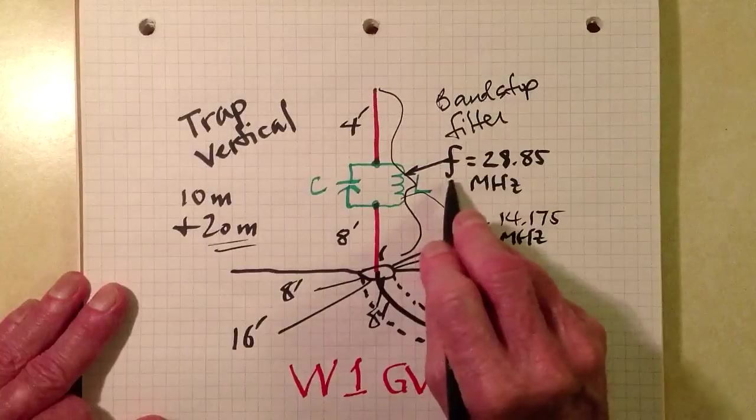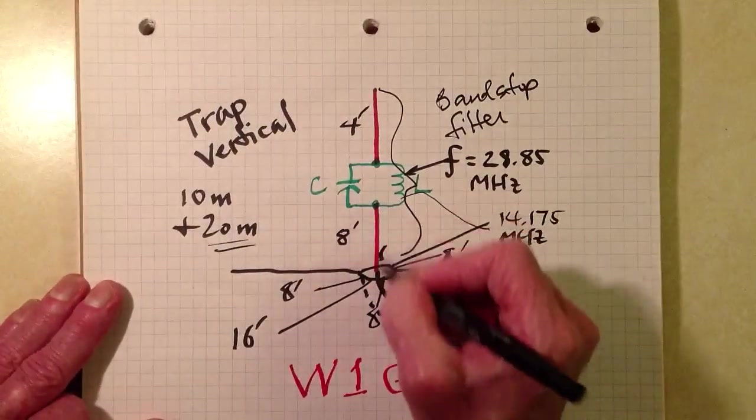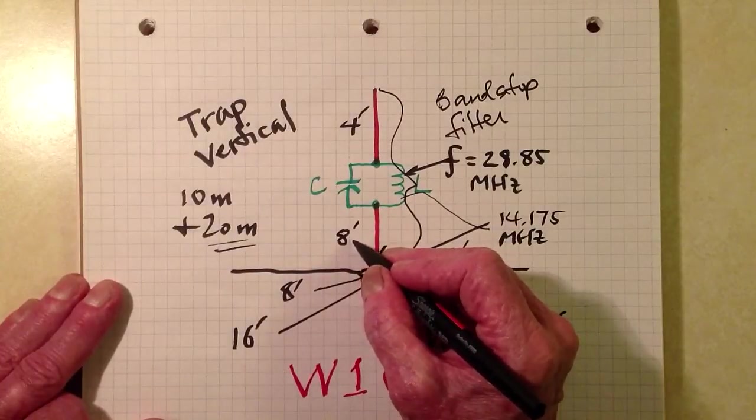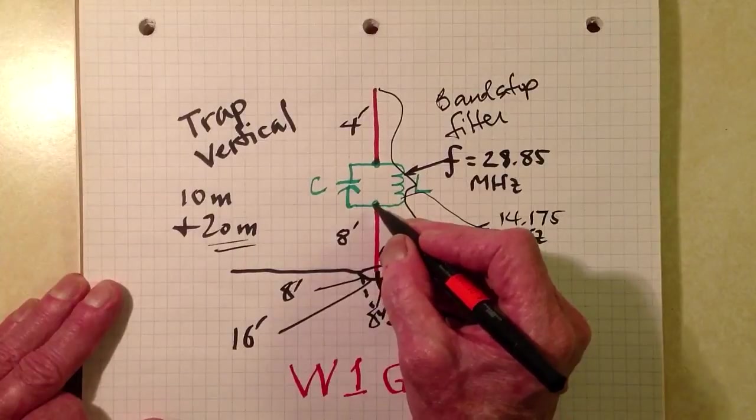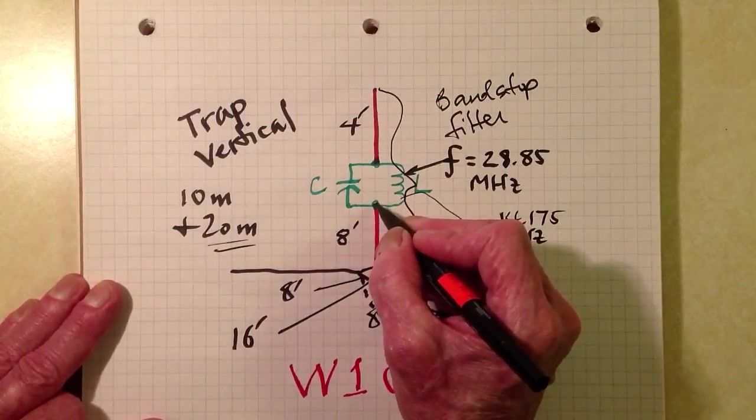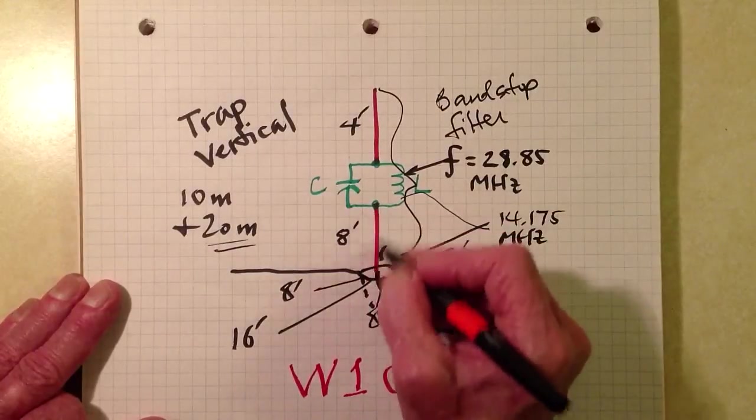Resonant at a frequency f of 28.85 megahertz. So the lower section of this antenna, which is one quarter of a wavelength on 10 meters electrically, can't send its signal past this trap. This trap pretty much tops out the antenna on 10 meters to just this part.